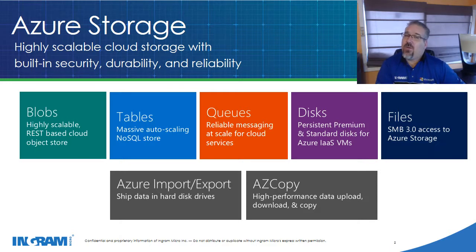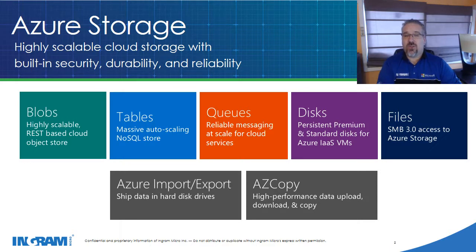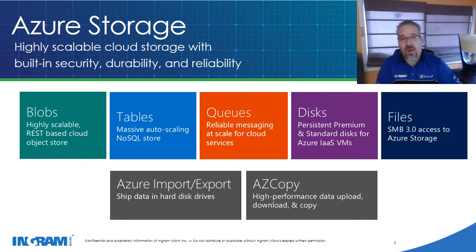Disks — that would be page blob and disk. Think of page blob and disk like RAID. If you purchase a physical machine, typically you'll get one drive for your operating system and application, and then you'd consider a RAID array for your data. The same rings true in Azure: in any instance you deploy, Microsoft carves out 127 gigs of storage for your operating system and application. We would highly encourage you to look at page blob and disk for production storage — that's attached storage for Azure.